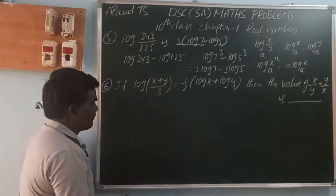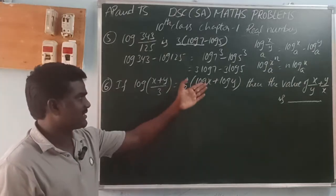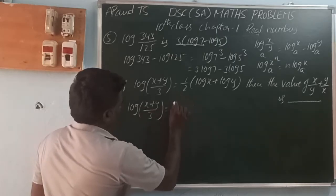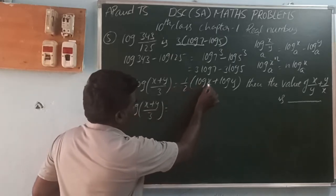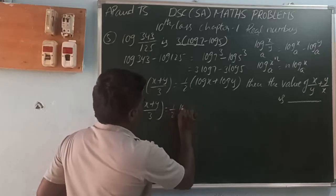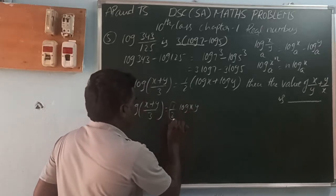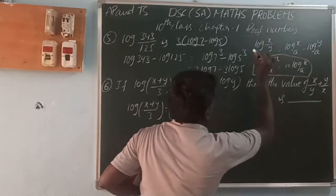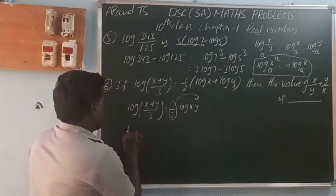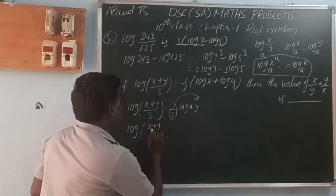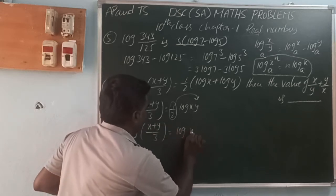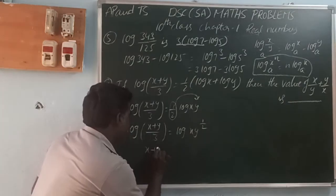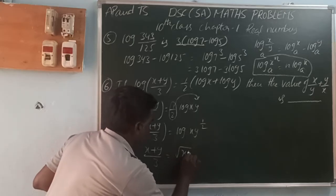Next: if log((x plus y) divided by 3) equals 1/2 times (log x plus log y), then find the value of x/y plus y/x. Given log((x plus y)/3) on the left side and log x plus log y on the right. Working through this: the right side becomes log(square root of xy), so (x plus y)/3 equals square root of xy.